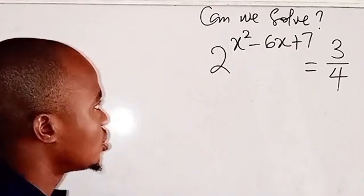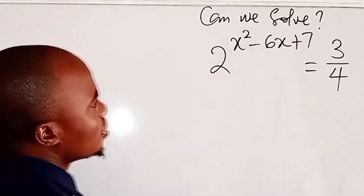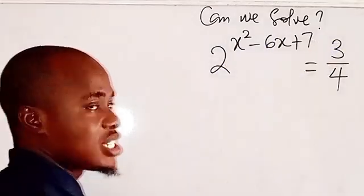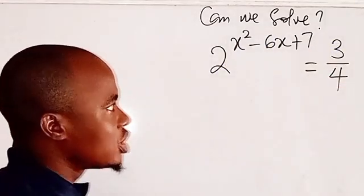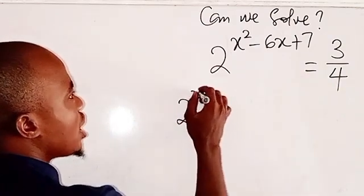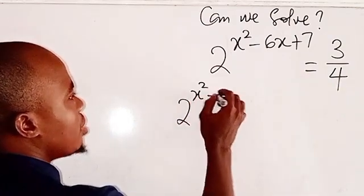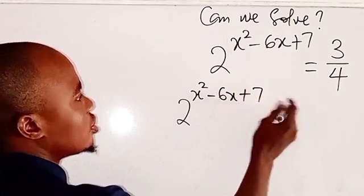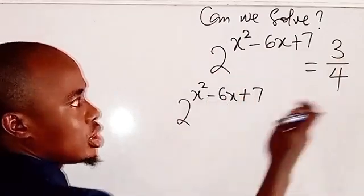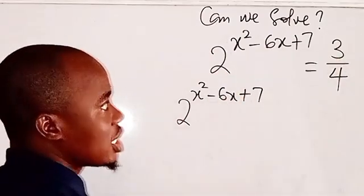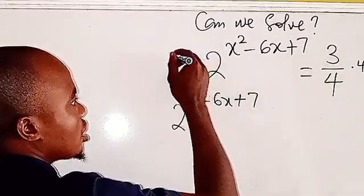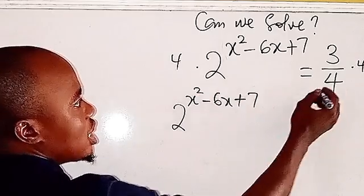So here we have two to the power of s squared minus six s plus seven equals three over four. Now we can write this equation as two to the power of (2s squared minus six x plus seven), and if we multiply both sides by four, this four cancels the four on the right.